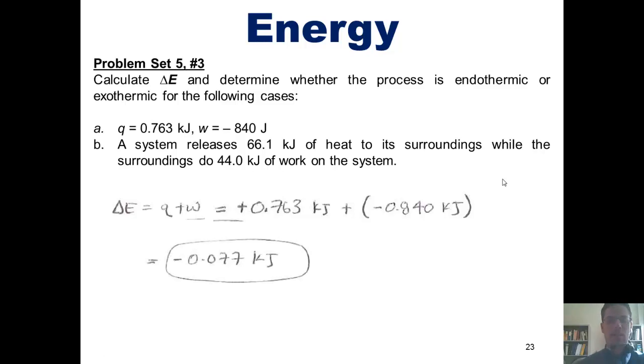It also asks us to determine whether it's endothermic or exothermic. Now keep in mind this. The answer to this question only depends on the value of Q. If Q is positive, then it's endothermic. If it's negative, then it's exothermic. What was Q? The original value given was positive 0.763 kilojoules. Thus, this process is endothermic.